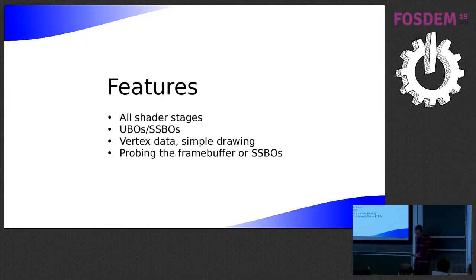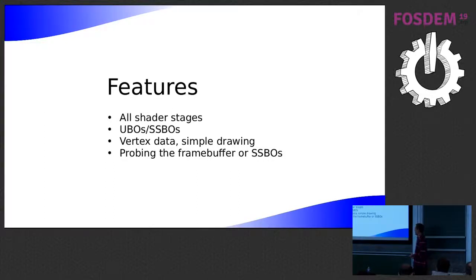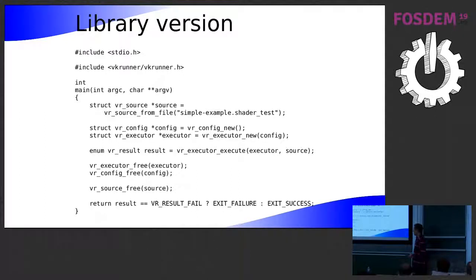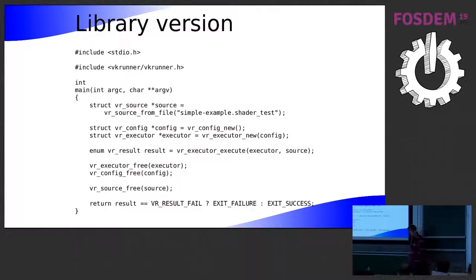The current status: VKRunner can do all the shader stages, it can read and write from SSBOs and read from UBOs, it can do vertex data and simple drawing, and it can probe the frame buffer or SSBOs. It has a library — when you build it, it builds a small static library with a public header, which is useful if you want to integrate it into another test suite. You just give it a source file and tell it to execute it, and it will tell you if it worked or not.